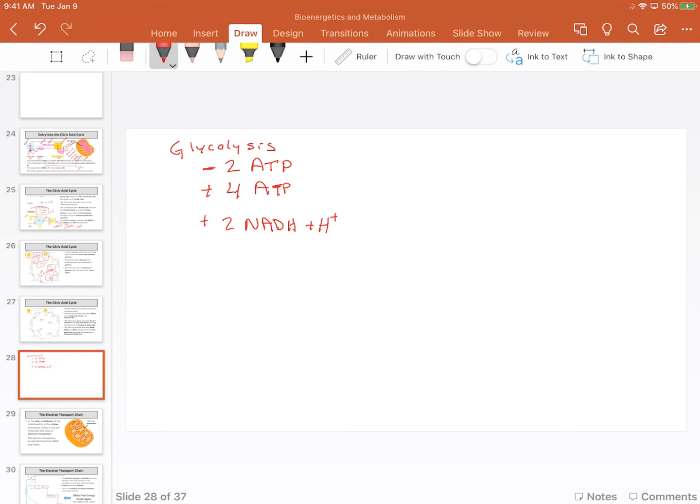Now, let's look at what I like to call the preparatory step. This is where we're going to convert pyruvate into acetyl-CoA. So, I'm going to call it the prep step. You can call it whatever you want. I'm not too hung up on names in this case.